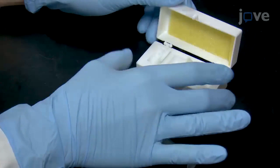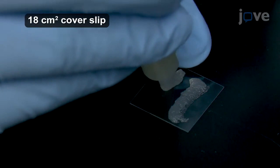If the chamber will be used for static imaging or injection experiments with minimal solution flow, then use a syringe to apply two parallel strips of petroleum jelly to a coverslip, one centimeter long and 0.5 centimeters apart.